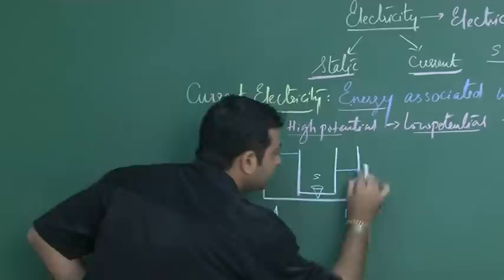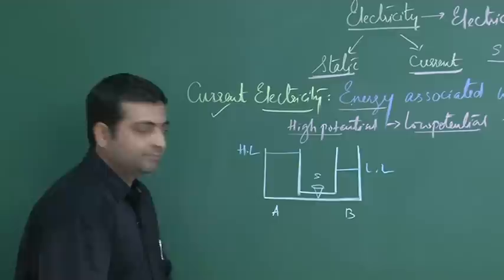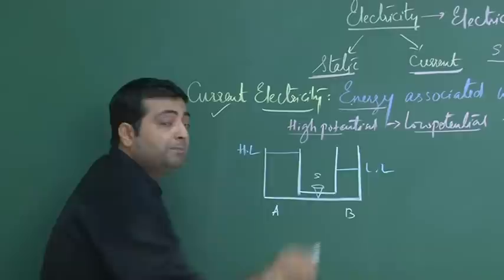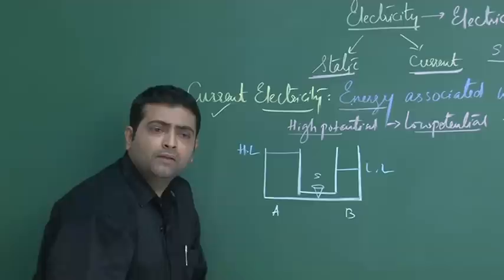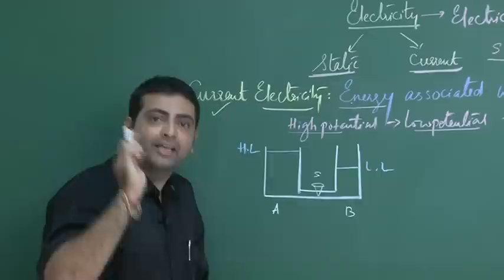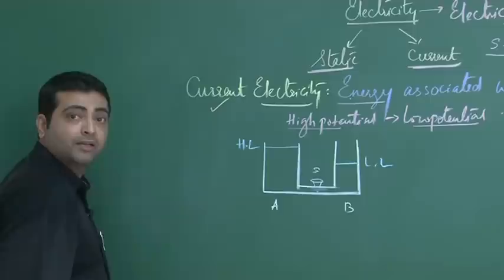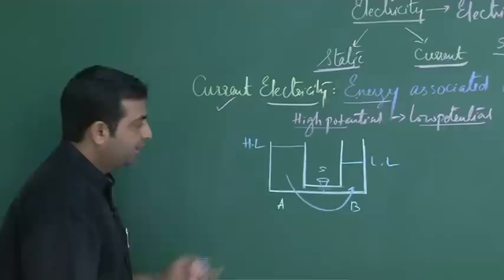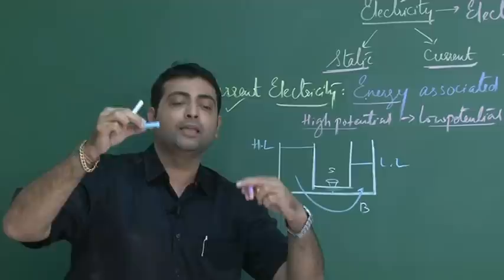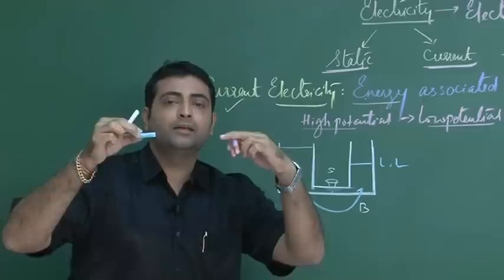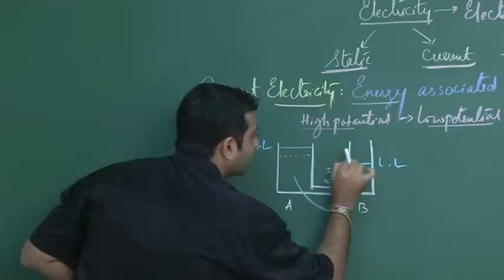Let us consider cylinder B has water at the lower level. The difference between the two levels is the difference in hydrostatic pressure. Since there is a difference in potential — a difference in level — if I open the stopcock, water starts running from A to B. When the water starts running, the level of A will go on decreasing while the level of B will go on increasing, until the two levels become equipotential.